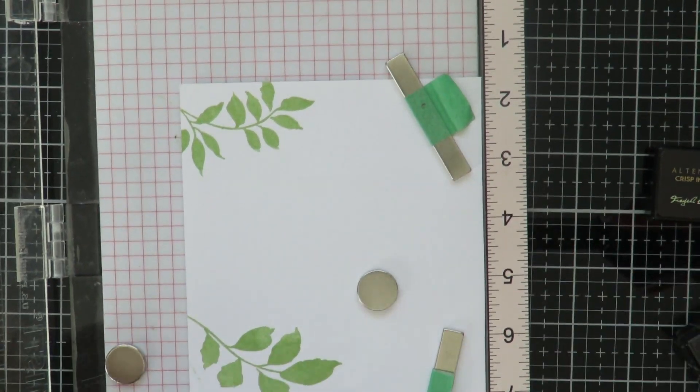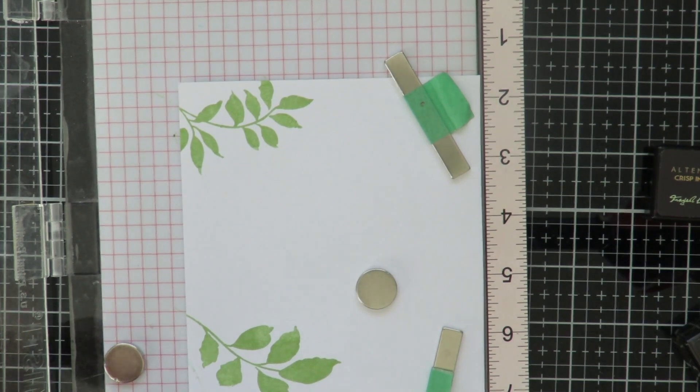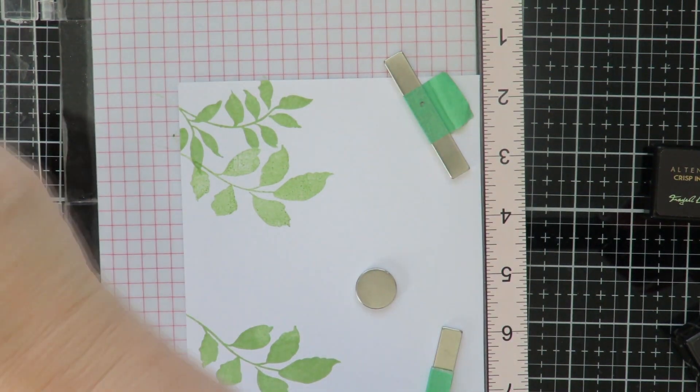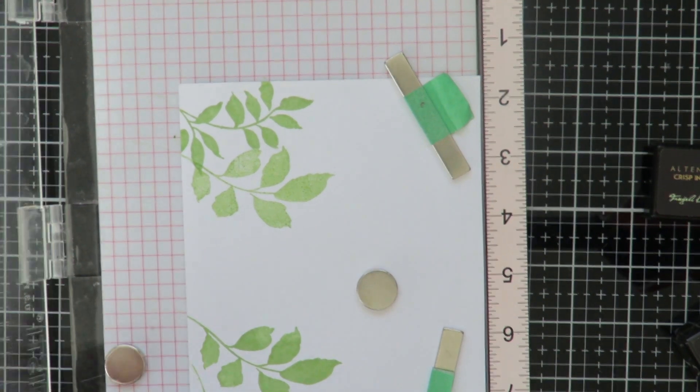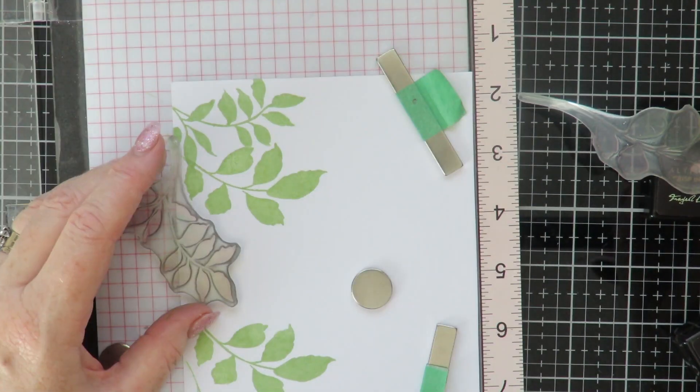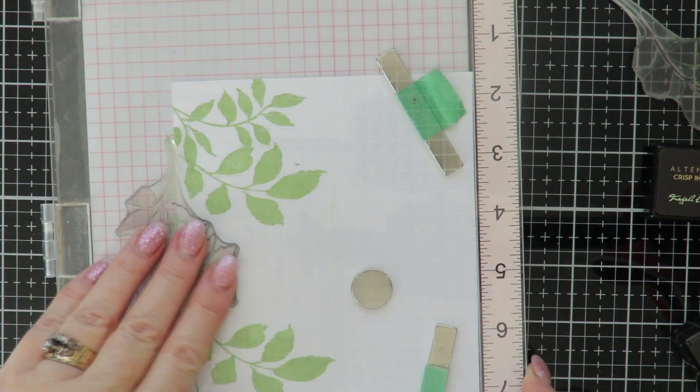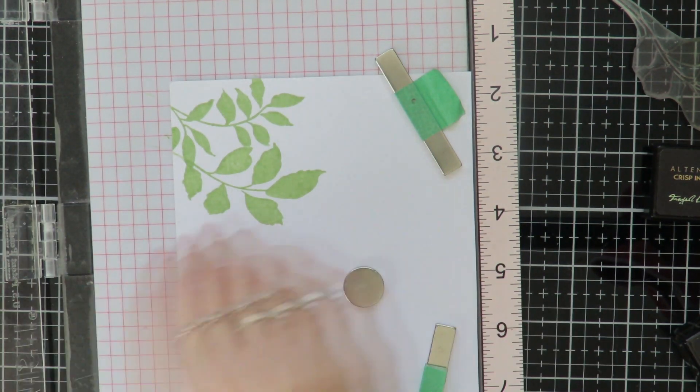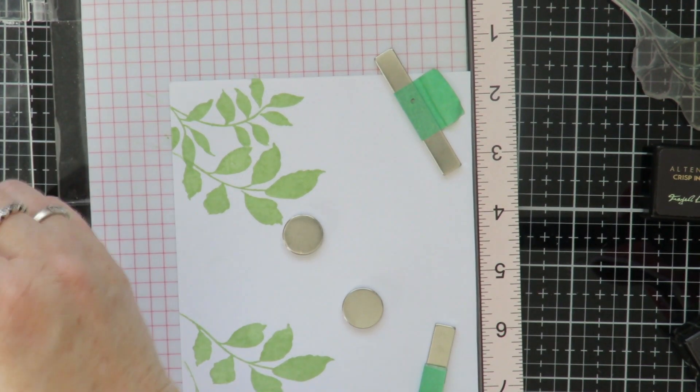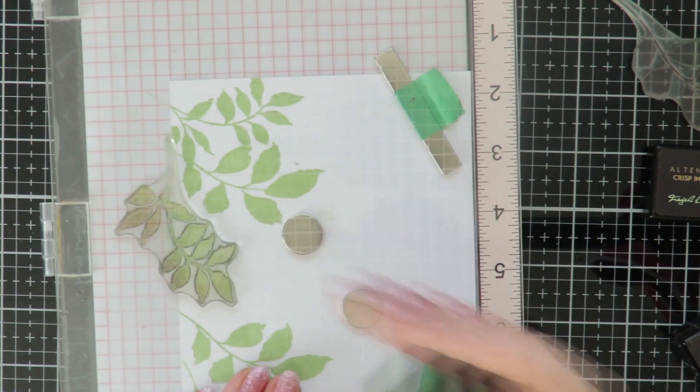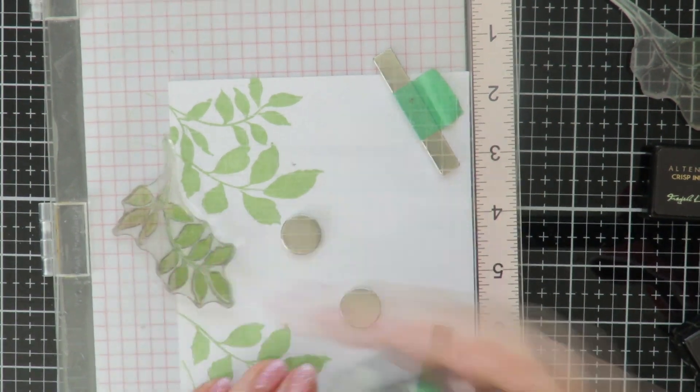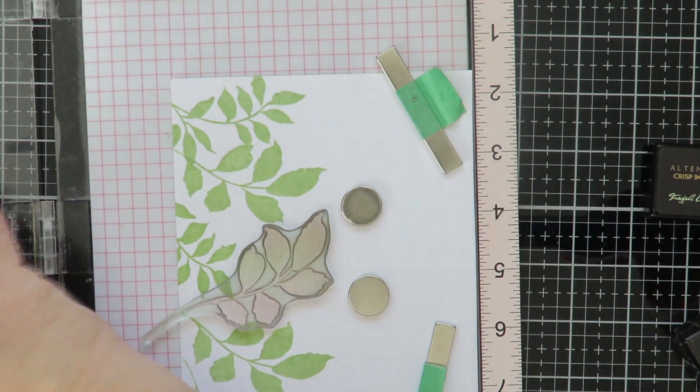The final version that I did was I ended up just using two colors from the Altenew inks. I used Forest Glades as my base color and I did a lot more stamping on my base so I filled it right up, and then I used the Evergreen as the top color. It turned out a lot more sort of olivey in the green colors but I really like this version as well.